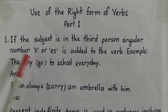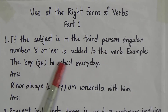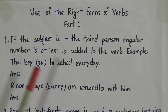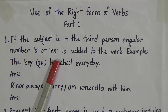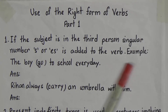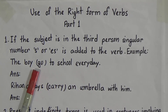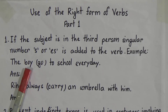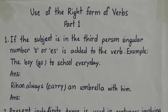Rule number 1: if the subject is in the third person singular number, -s or -es is added to the verb. So if our subject is in the third person singular number, we will add -s or -es to the main verb.